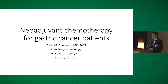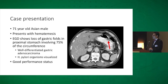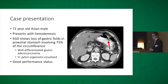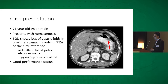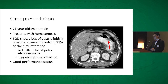This is a 71-year-old male, a native of China. He presents with hematemesis in the emergency room, is stabilized, and does not need a blood transfusion. He undergoes an EGD which shows not a focal mass but a loss of gastric folds in the proximal stomach involving about 75% of the gastric circumference. The endoscopist appropriately does a series of biopsies and the pathology shows poorly differentiated gastric adenocarcinoma. A silver stain is done and H. pylori organisms are visualized as well. Fortunately, after getting over his brief hematemesis, this patient does have a good performance status. Keep this patient in mind as we talk about some of the concepts that follow and how we might apply those to this patient.